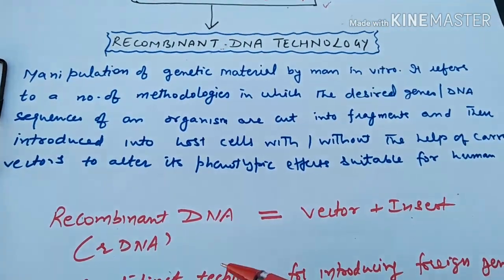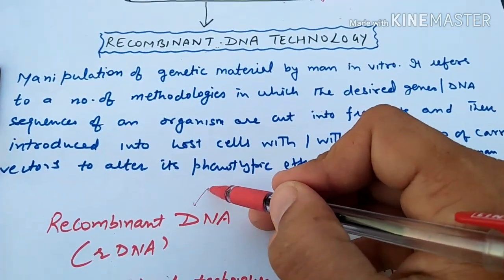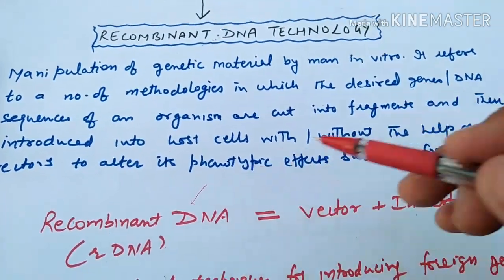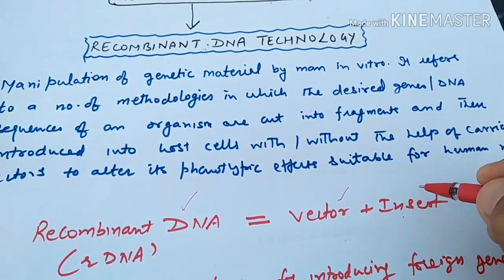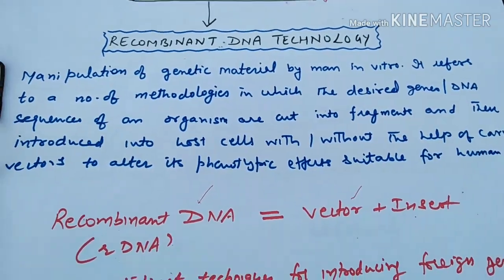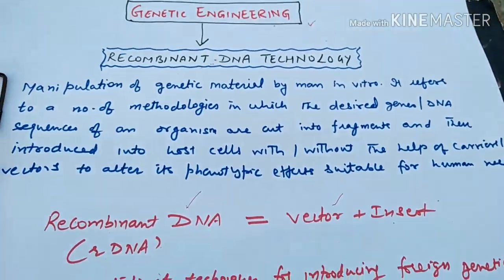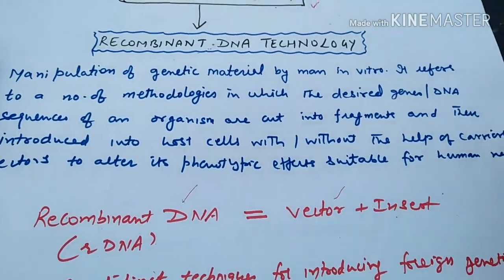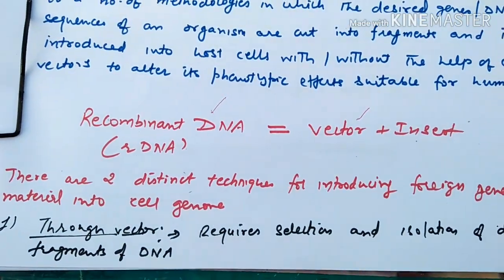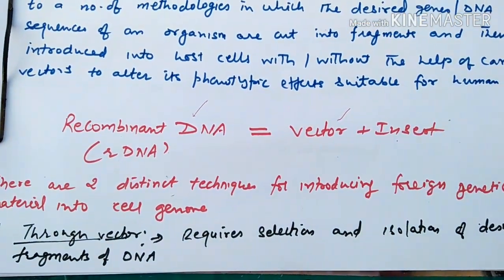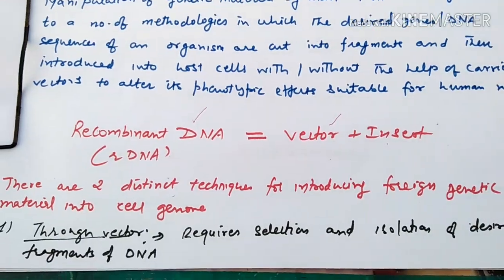That is recombinant DNA technology. Recombinant DNA is called rDNA. rDNA consists of a vector and an insert — insert meaning the gene that you have added. We will do this in detail. There are two basic techniques which we will introduce to the genetic material.